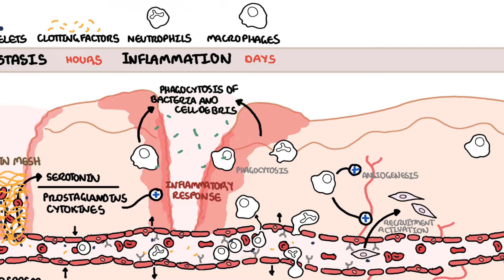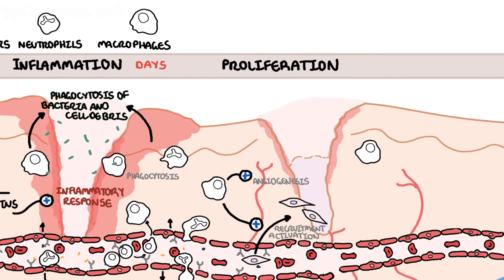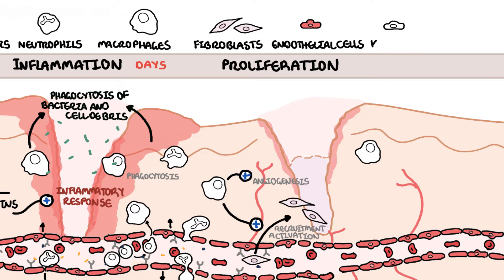This leads to the third phase of wound healing, which is proliferation. During the proliferative phase, a new vascular bed is formed to provide oxygenated blood to the wound, and the wound fills with granular tissue. The key players here are the cells that have been recruited and proliferated thanks to the cytokines released by the macrophages during the inflammatory phase. These cells include fibroblasts, endothelial cells, and in skin injury, keratinocytes.